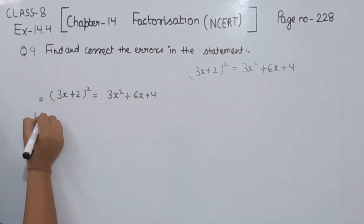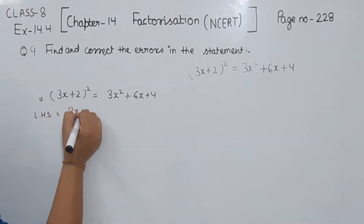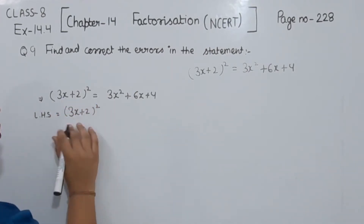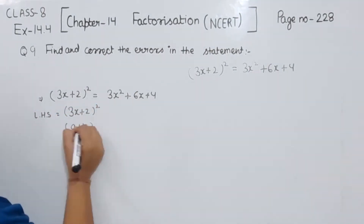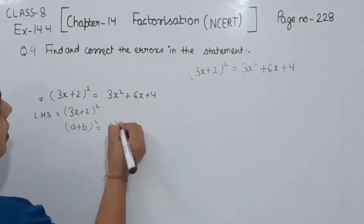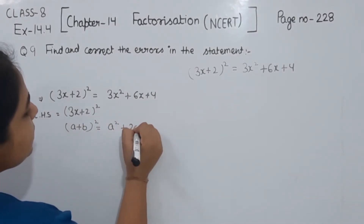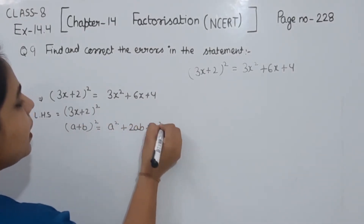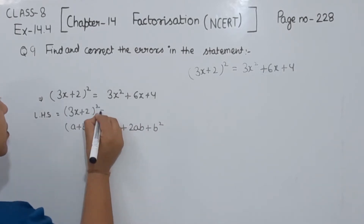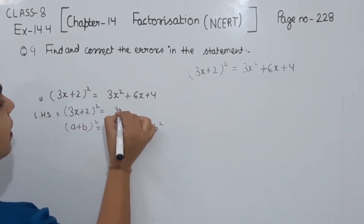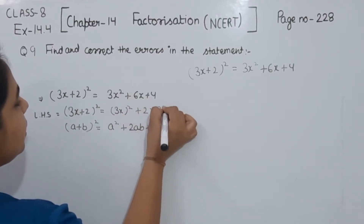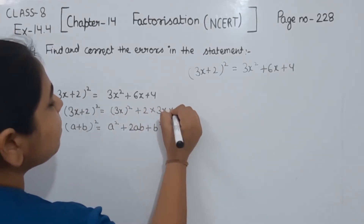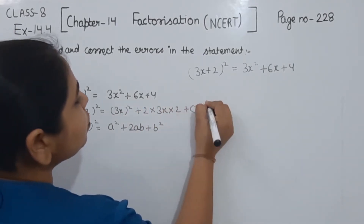Now first of all we are going to take the left hand side, which is (3x + 2)². To solve this we are going to use the identity: (a + b)² = a² + 2ab + b². So applying this here, we have (3x)² plus 2 multiplied by 3x multiplied by 2, plus 2².